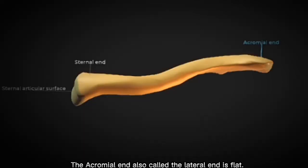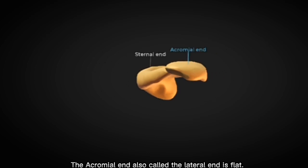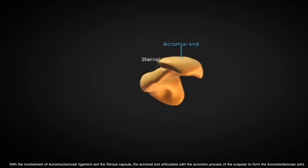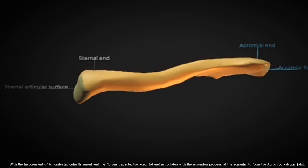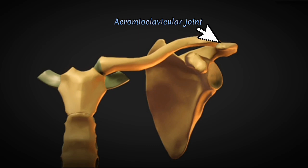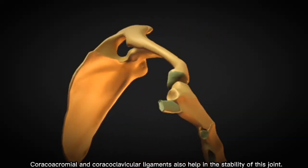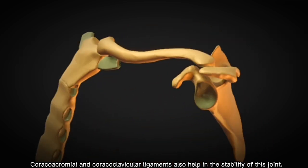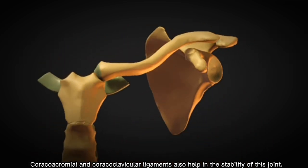The acromial end, also called the lateral end, is flat. With the involvement of acromioclavicular ligament and the fibrous capsule, the acromial end articulates with the acromion process of the scapula to form the acromioclavicular joint. Coracoacromial and coracoclavicular ligaments also help in the stability of this joint.